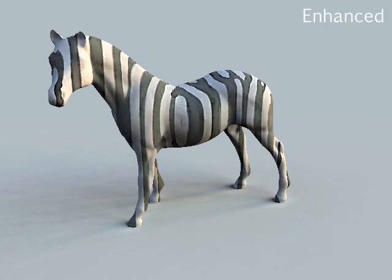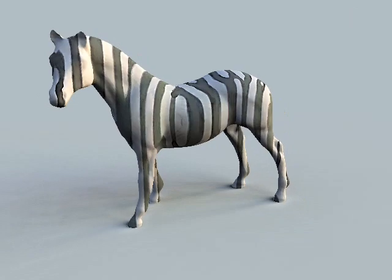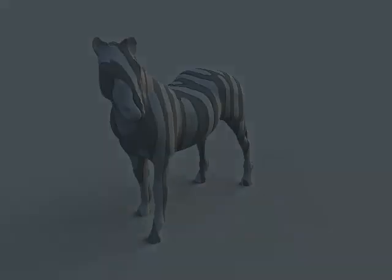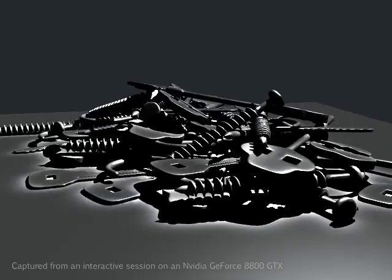Under our enhancement, luminance changes created by a texture are also enhanced. This zebra example, whose stripes arise from its reflectance — not geometry — shows that we seamlessly enhance textures.